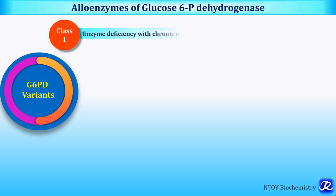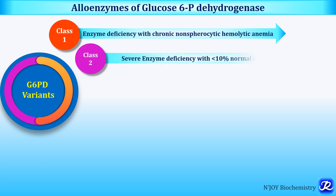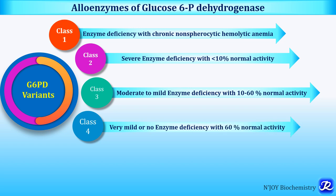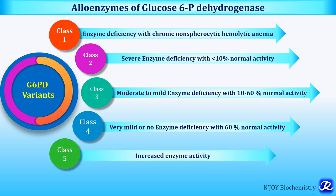The World Health Organization classifies these G6PD genetic variants into 5 classes according to level of enzyme activity in the red cells. Class 1: enzyme deficiency with chronic non-spherocytic hemolytic anemia. Class 2: severe enzyme deficiency with less than 10% of normal activity. Class 3: moderate to mild enzyme deficiency with 10–60% of normal activity. Class 4: very mild or no enzyme deficiency with 60% of normal activity. Class 5: increased enzyme activity.